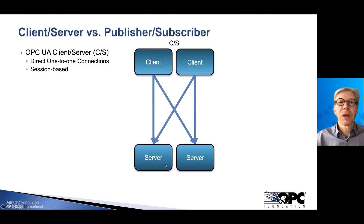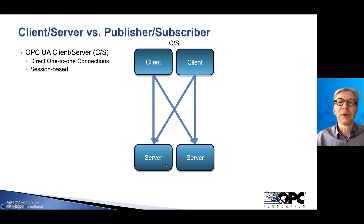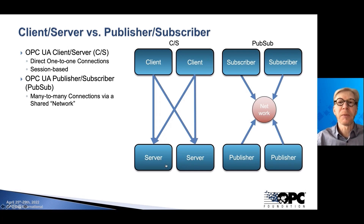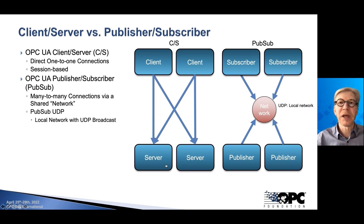In the traditional OPC UA client-server, we're talking about direct one-to-one connections between applications. One acts as a server, the other acts as a client. The major thing here is that these connections are always session-based. The session has a lot of advantages — we can authenticate the applications with each other, and in all further communication we know who is communicating with whom. In the new publisher-subscriber model — PubSub as we call it — we're talking about many-to-many connections, where all participants, publishers and subscribers, connect to a common network.